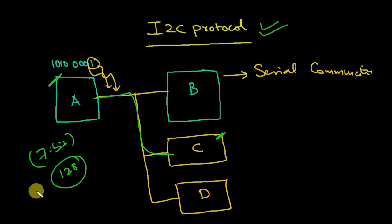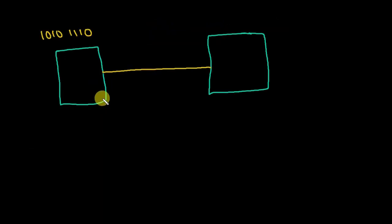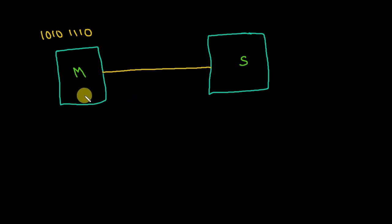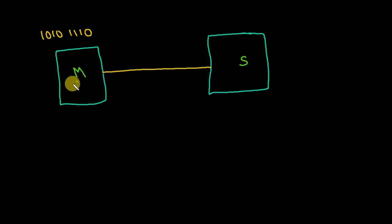With 128 devices connected, I can communicate independently with whichever device I want. By independently I mean I can establish a proper communication with any specific device. But it needs some protocol. Before understanding that, we need to see how serial communication works. Here we have a device called Master (M) and a device called Slave (S). I have to send this data properly to S.